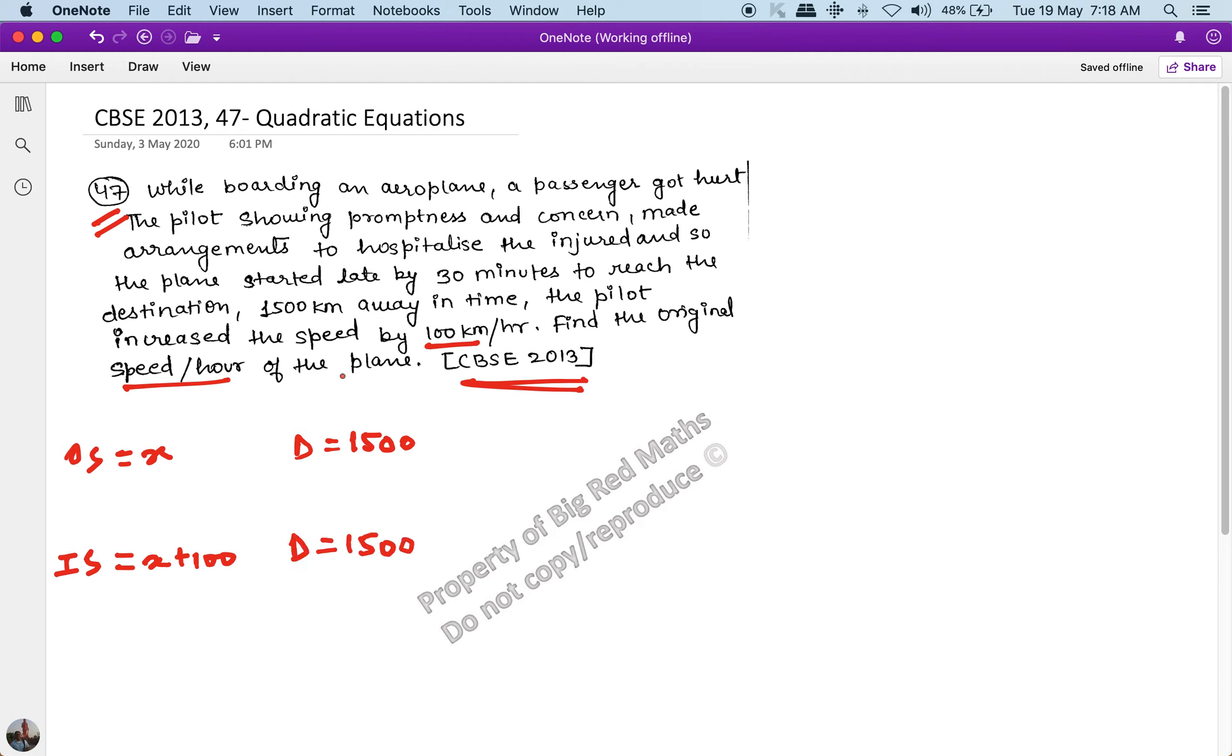Now the time taken in scenario one, the time taken T1, is distance upon speed which is 1500 upon x.